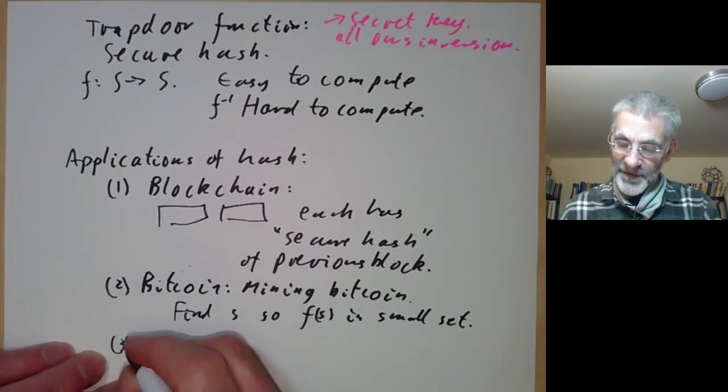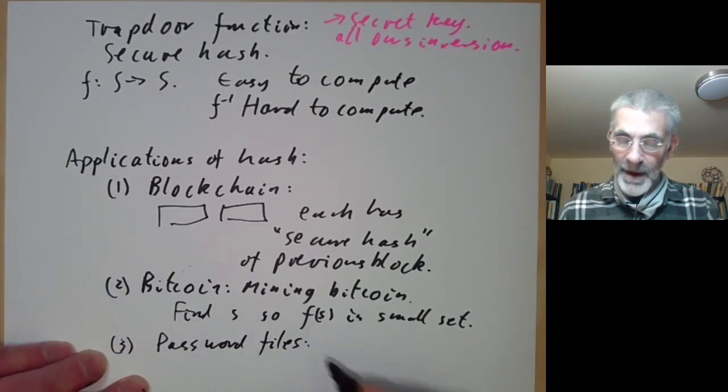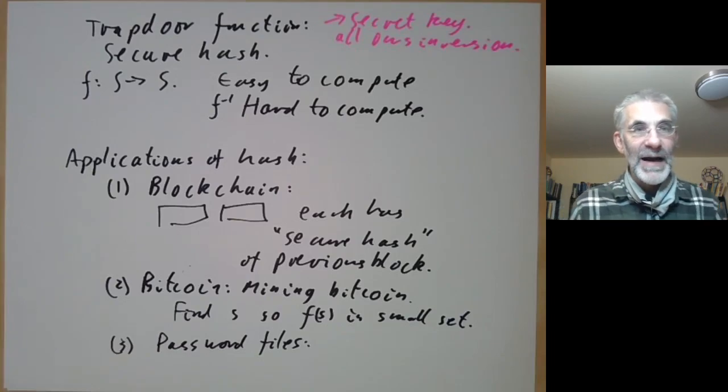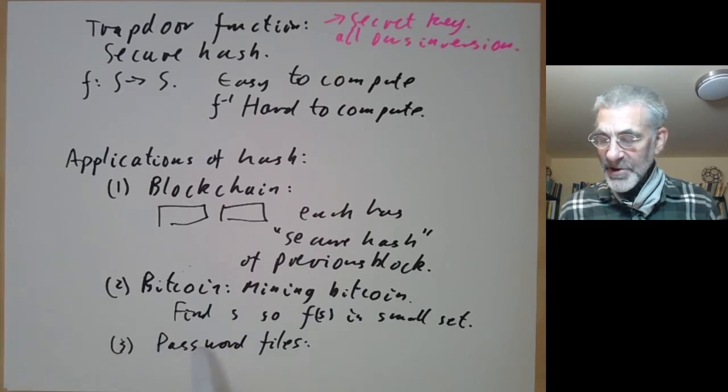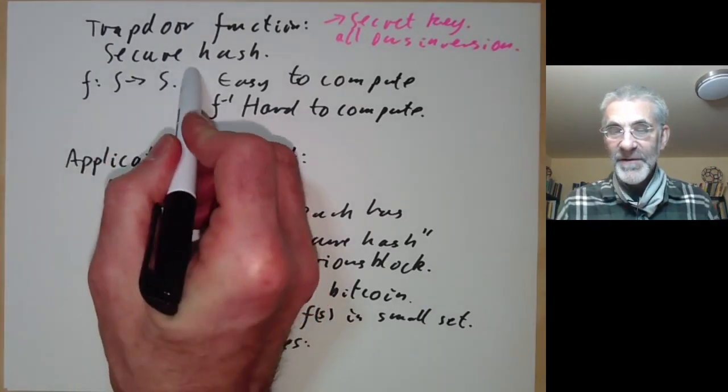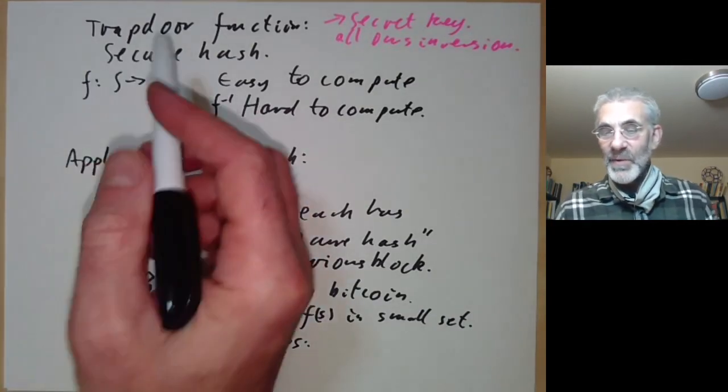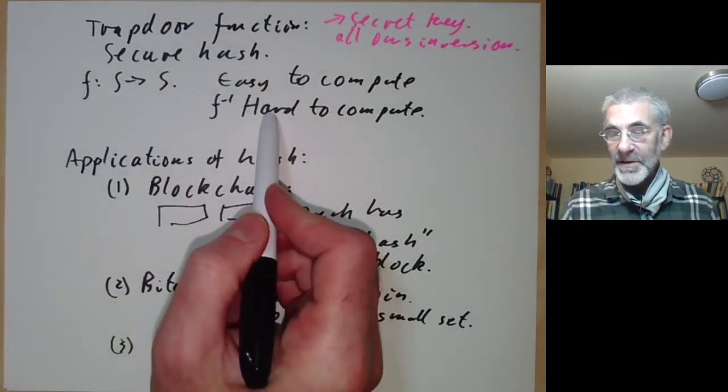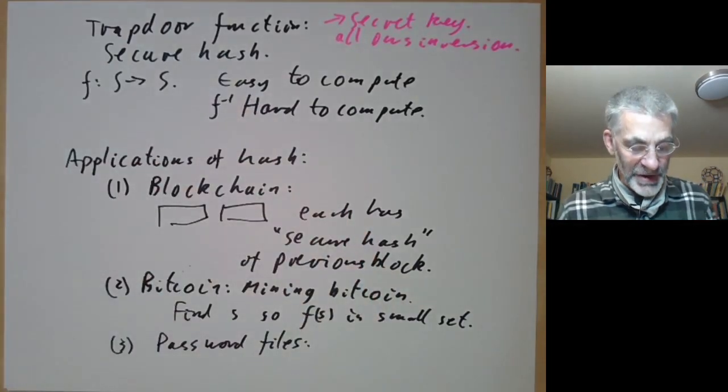There's another application for password files. In the very early days, computers would just store passwords in open text, and this was a real problem—if a hacker found the password file, they would know everybody's password. So what you do is hash all the passwords with a secure hash function. Then to check someone's password you just hash the password they've entered and see if it's the same as the hash you've got. Since the hash function is hard to compute, if you don't know the password but have read the password file, it's still not much use to you.